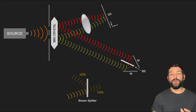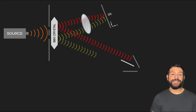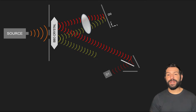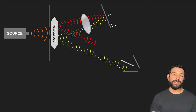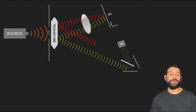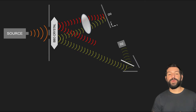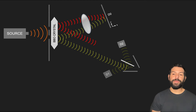Therefore, a photon associated with the top slit has equal probability of passing through the beam splitter and being detected at D1 or reflecting back to be detected at D2. And the same goes for the bottom slit photon. With 50% probability it will pass through the beam splitter to be detected at D2 and with 50% probability it will be reflected back towards D1.